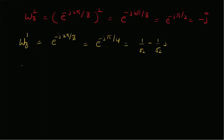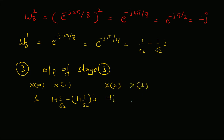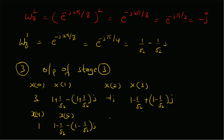To summarize the Stage 3 outputs: X[0]=3, X[1]=(1+1/√2) − j(1+1/√2), X[2]=−j, X[3]=(1−1/√2) + j(1−1/√2), X[4]=1, X[5]=conjugate of X[3]=(1−1/√2) − j(1−1/√2), X[6]=conjugate of X[2]=j, X[7]=conjugate of X[1]=(1+1/√2) + j(1+1/√2).